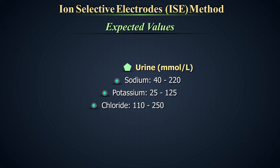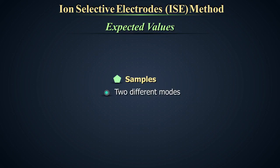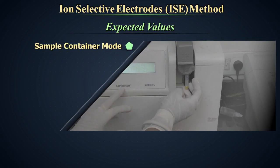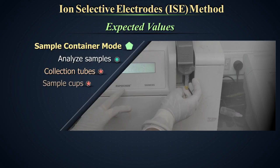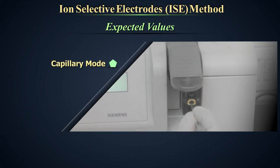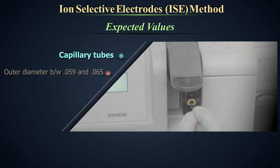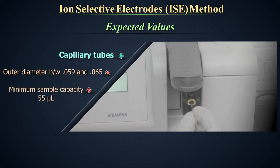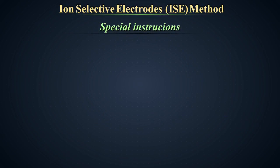In this instrument, samples can be run in two different modes. Sample container mode is to analyze samples from collection tubes, sample cups or syringes. Capillary mode to analyze samples from capillary tubes. Capillary tubes must have an outer diameter between 0.059 and 0.065 and a minimum sample capacity of 55 microliters.